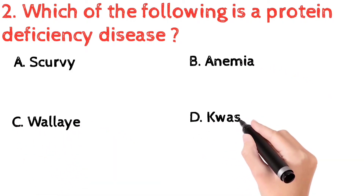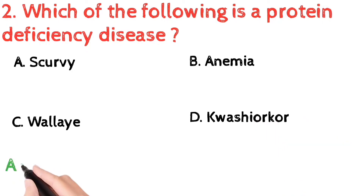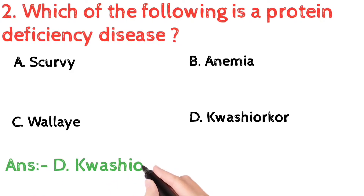The correct answer is d) kwashiorkor. Kwashiorkor is a form of malnutrition caused by a lack of protein in the diet. It is also known as edematous malnutrition. Kwashiorkor and marasmus are the main syndromes associated with protein deficiency.